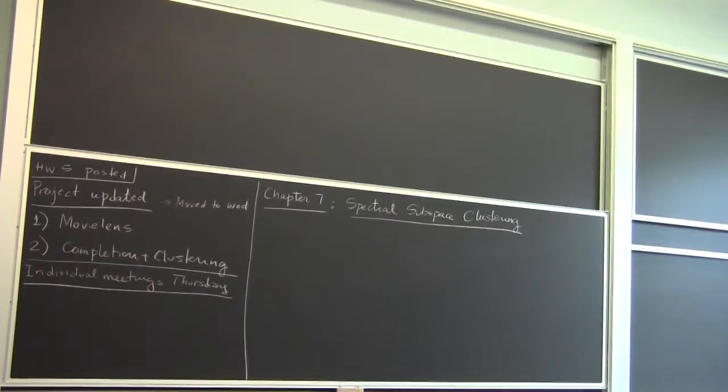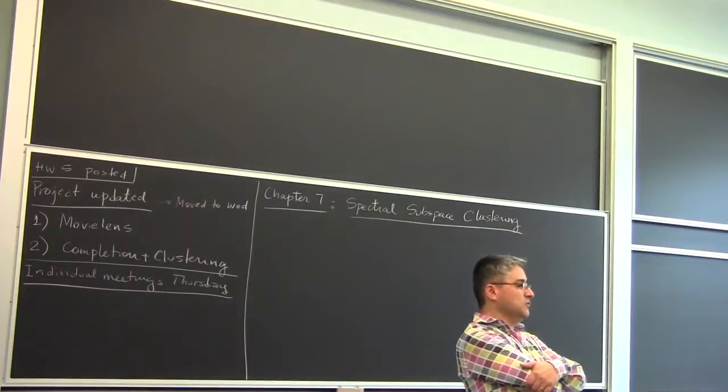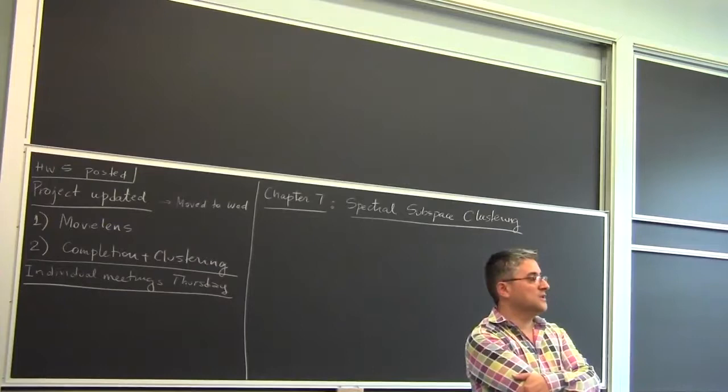A couple of lectures ago, we began thinking about the question of data that lives in many subspaces: how do we cluster the data, how do we find their subspaces, their dimensions, how many there are. We discussed an algorithm called k-subspaces that is able to do this task. K-subspaces assumes that you know how many subspaces are present and assumes that you know the dimension of every subspace.